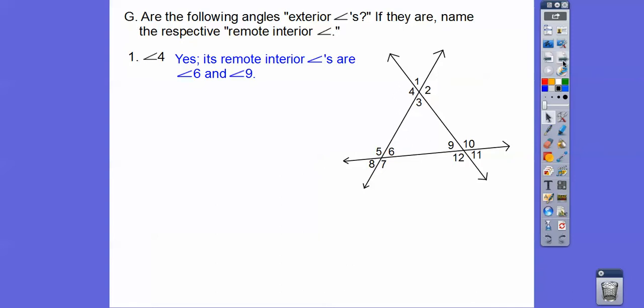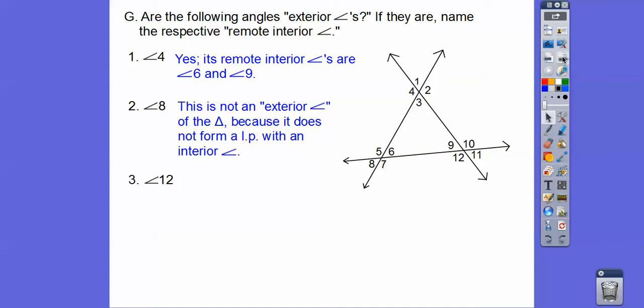How about angle 8? Does this form a straight line with angle 6? No, it doesn't. It's a vertical angle. It is an outside angle, but it's not considered an exterior angle because it doesn't form a linear pair. How about 12? Does 12 form a linear pair with angle 9? Yeah, makes this nice straight line. So yes, it is an exterior angle. The two remote interior angles are these two guys, the other two inside angles.